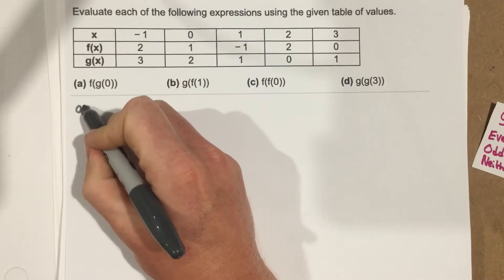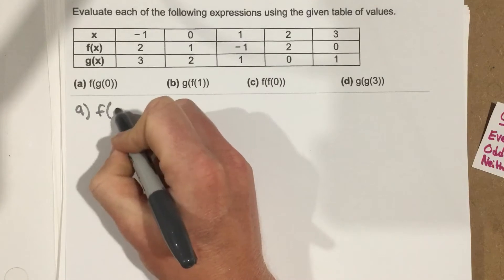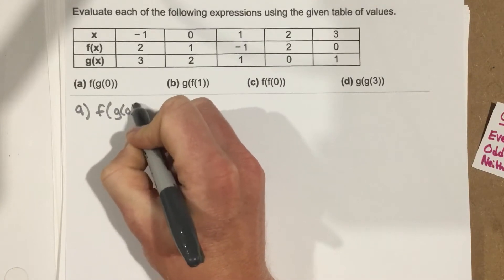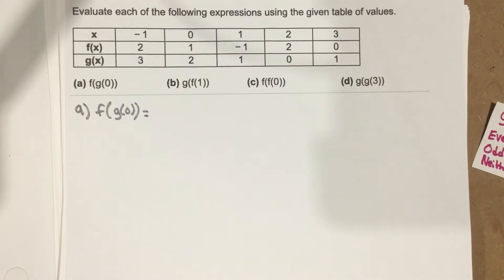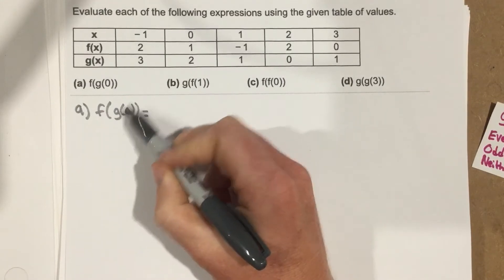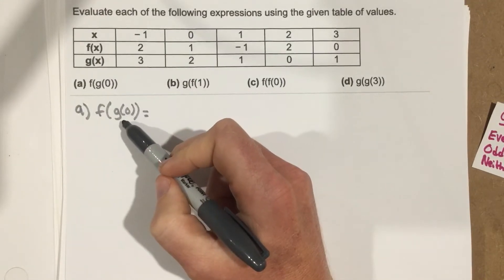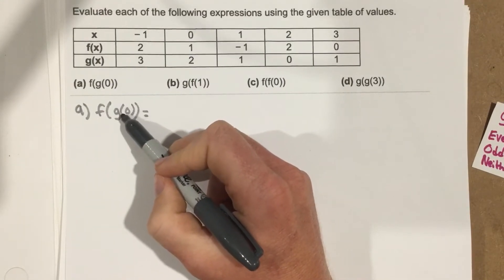So let's go ahead and say part A. We're going to say f of g of 0. And I'm going to write it out just like I would do any other problem. The only difference is I just go to the chart to find my answers. So if I take 0 and I plug it into the g function,